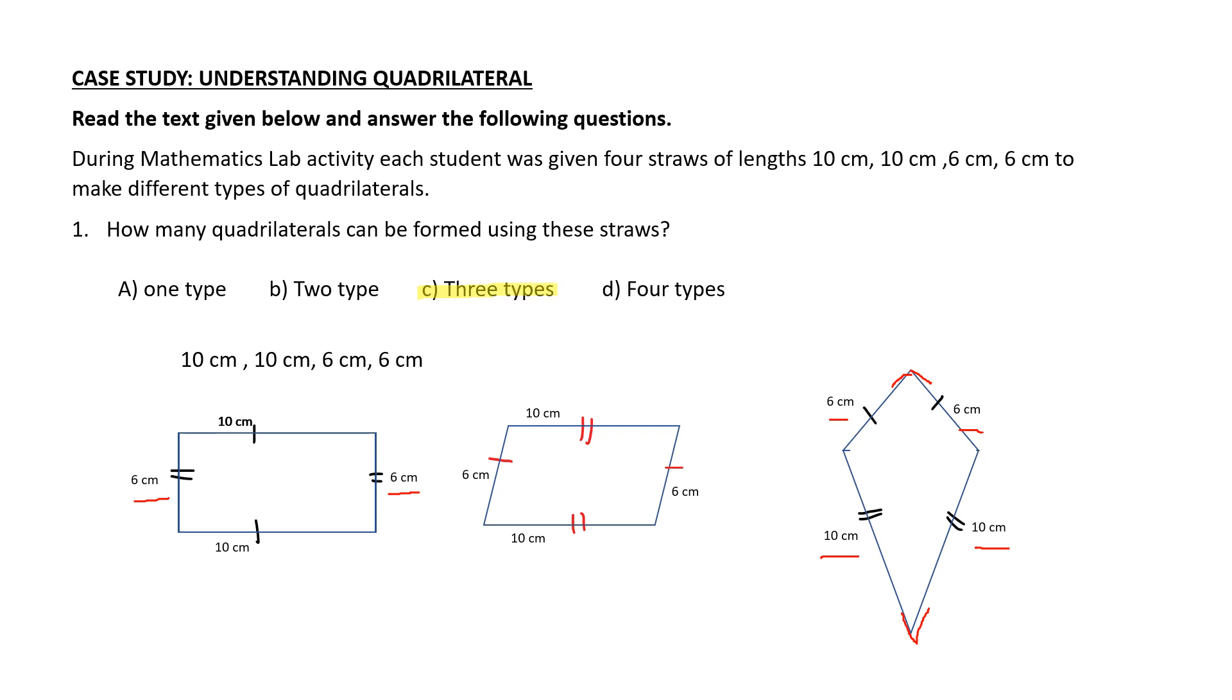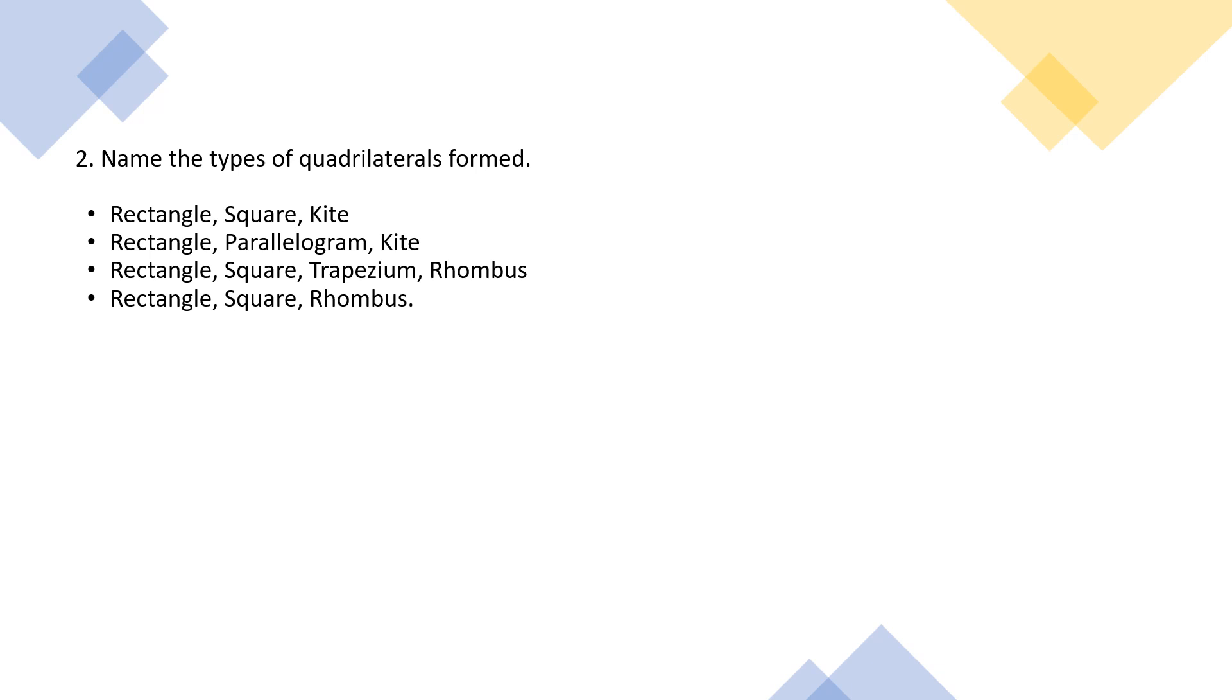Let's move to the second question: name the types of quadrilaterals formed. Option A: rectangle, square, kite. Option B: rectangle, parallelogram, kite. Option C: rectangle, square, trapezium, rhombus. And option D: rectangle, square, and rhombus.